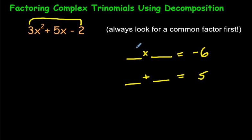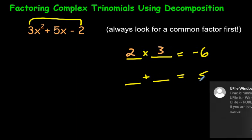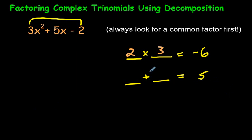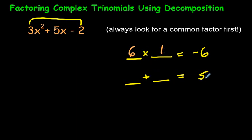Let's figure out what numbers multiply to make negative 6 and add to make 5. You might say 2 times 3 — but 2 plus 3 is 5, and that doesn't multiply to make negative 6. If we change one to negative: negative 2 times 3 would work for the product, but negative 2 plus 3 equals 1, not 5. What about 6 and 1? 6 plus 1 is 7, but 6 minus 1 is 5. So if we make it negative 1: 6 times negative 1 is negative 6, and 6 plus negative 1 is 5. So 6 and negative 1 are the two numbers we need.